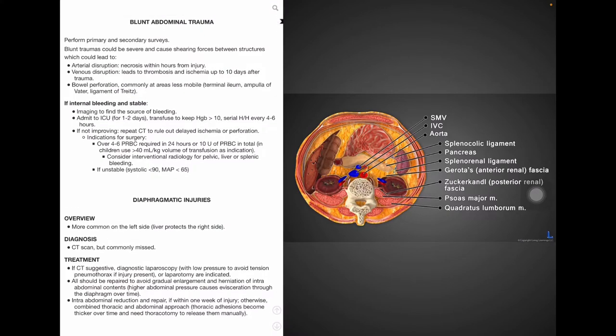So the first subject we have is blunt abdominal trauma. We are talking about a patient who comes in with blunt abdominal trauma as a result of motor vehicle collisions, assaults, falls, and the like. These cases should be taken seriously because they could progress into serious conditions, such as arterial disruption, venous disruption, and bowel perforation at less mobile sites, including the terminal ileum, ampulla of Vater, and ligament of Treitz, which is the anatomical boundary separating the upper and lower GI.